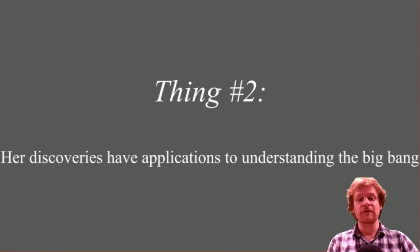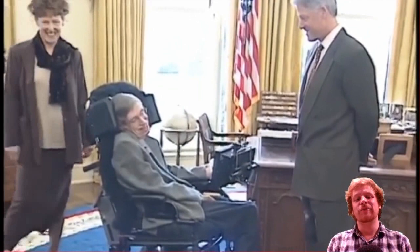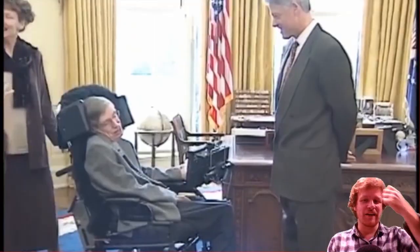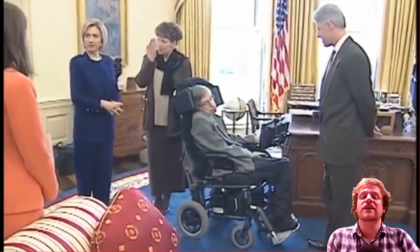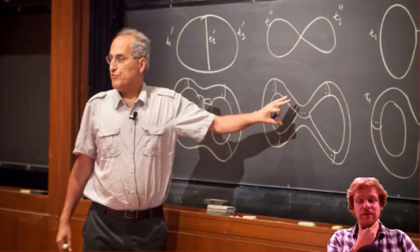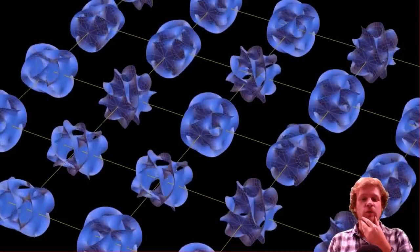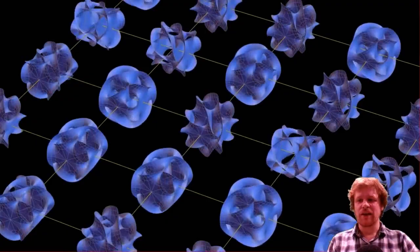Her discoveries have applications to understanding the Big Bang. So probably you've heard of string theory or maybe M-theory. M-theory is what this guy, Stephen Hawking, will tell you is the, well, what he would have told you, is humanity's best hope for understanding the Big Bang. M-theory was created by this guy, Ed Witten. I certainly don't understand M-theory, but I know that it's about weirdly shaped surfaces moving around in weirdly shaped spaces. And Maryam Mirzakhani's stuff is certainly very useful for studying those.